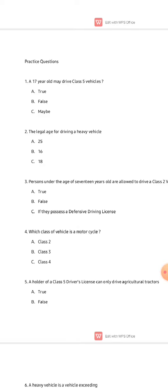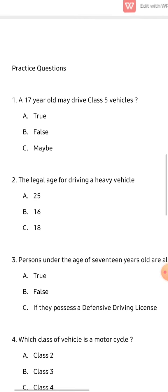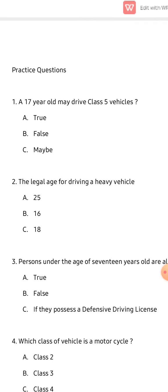We know 'maybe' is wrong. Class five is our farm and construction vehicles — earth-moving machines, combined harvesters, payloaders. To attain a class five driver's license you need to be 18 years or older. So can a 17-year-old drive a class five vehicle? That is false. The correct answer for number one is B — false.